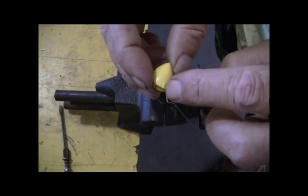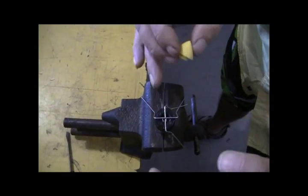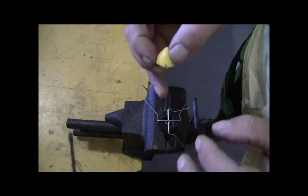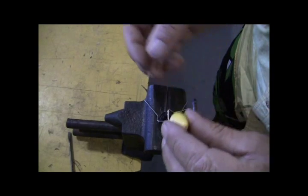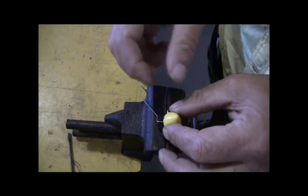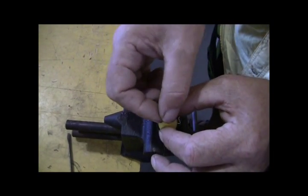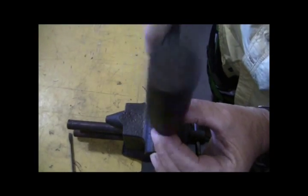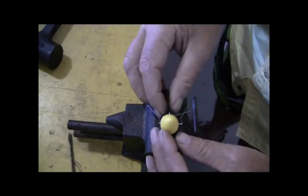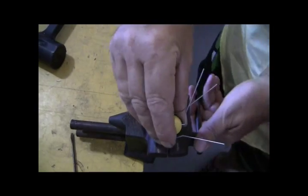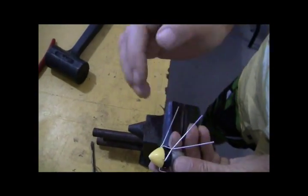And then on here there's a lineup mark. Look for your lineup mark on your retainer ring, which is there. Take that, place it on, and just tap it in place.